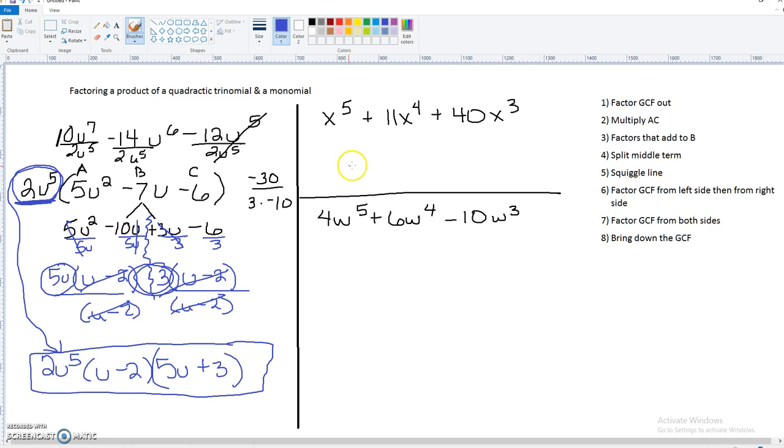Another type of problem that you'll have in this topic is this top one. And if you look, the first thing we need to do is see if we can factor something out from each term. Well, number-wise, there's nothing we can factor out, but letter-wise, we can take x cubed out.